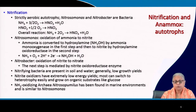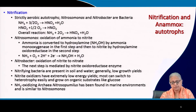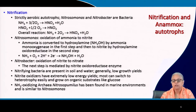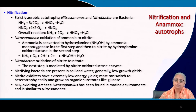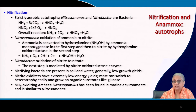Nitrosomonas oxidizes ammonia to nitrite, but this is actually a two-step process. First, ammonia is converted to hydroxylamine (NH₂OH) by the enzyme ammonia monooxygenase, present only in Nitrosomonas species. Then, hydroxylamine is converted by hydroxylamine oxidoreductase to nitrite. The first step: ammonia + O₂ + 2H⁺ + 2e⁻ → hydroxylamine; the second step converts hydroxylamine to nitrite.